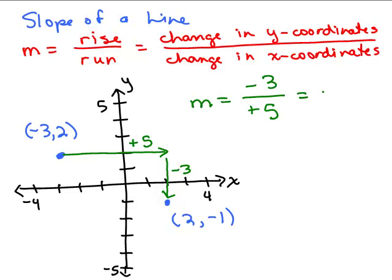So remember, this is just a number. The slope is simply the number negative three-fifths, which basically tells us the slant of the line going through those ordered pairs. By the way, this is not going through (0, 0) — I just didn't graph it very accurately.